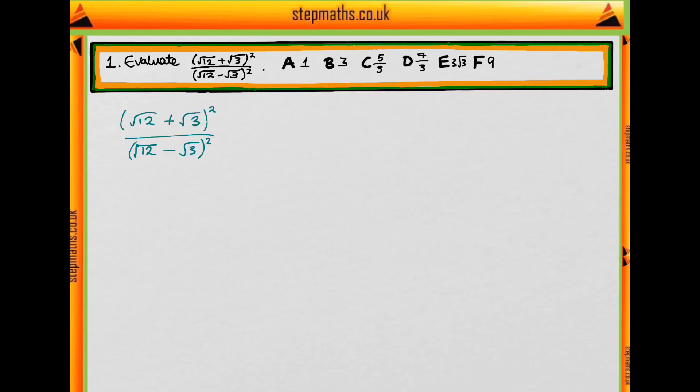To do this, let's just write it out. Instead of having the squares, we're just going to write out the two brackets next to each other and then expand them. Pause the video and have a go at doing that now.